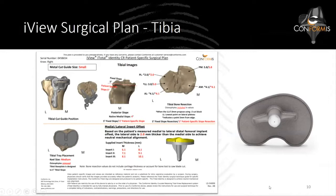This is the IV that came back, and you'll notice a few differences for those of you who are previous iTotal users. Up in the top section, you'll see that the metal cutting guide is labeled. These come in small, medium, and large — those are high-precision caps.